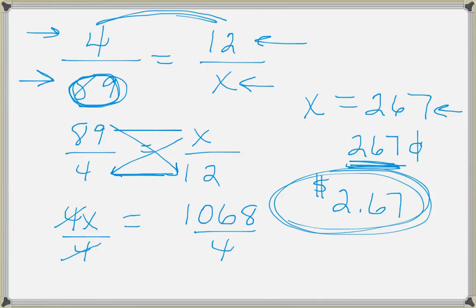And you need to make sure that when you set up your proportion, you're consistent. Like in this one, cans on top, cents on the bottom, or the other way around as long as you're consistent.